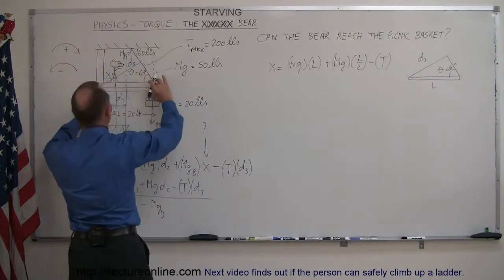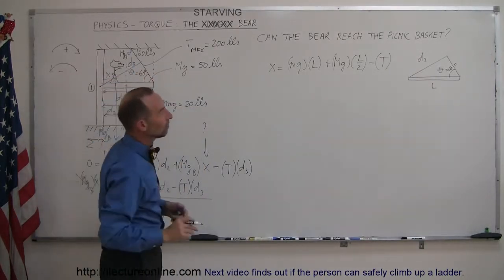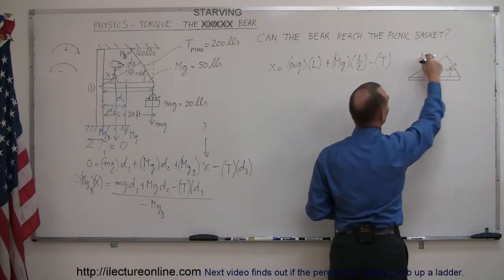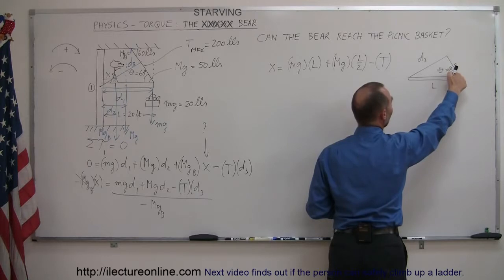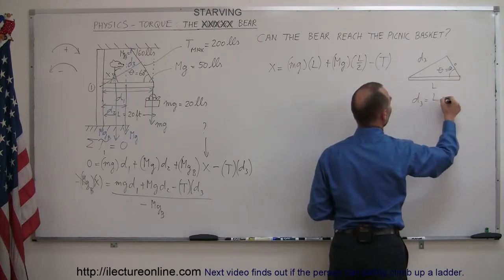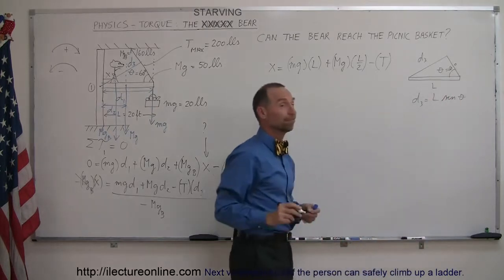So now I have a little triangle that represents this region right there. And I need to know what D3 is equal to. And this, the L looks like it's the hypotenuse. This is the opposite side to this angle right here. So I can say that D3 is equal to the hypotenuse, the length of the beam, times the sine of the angle theta.